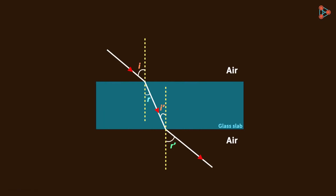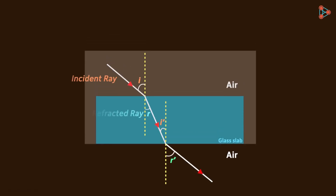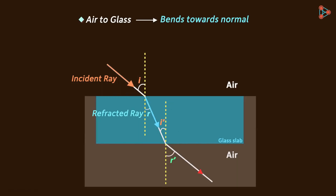The change in speed is the cause of the change in direction of light, and that is called refraction. However, when the light ray is going along the normal, there is no bending — the speed changes but there is no bending, and light travels straight forward. But if the light ray is not going along the normal, then there is always bending.